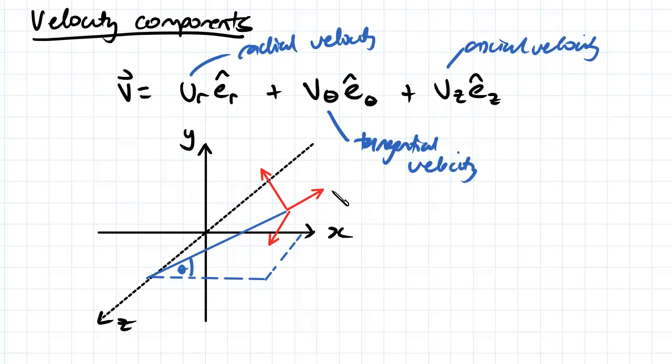We've got this radial velocity here, the tangential velocity here, and our axial velocity here. So that's how this works.